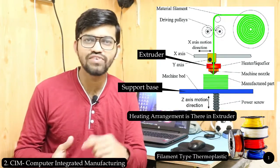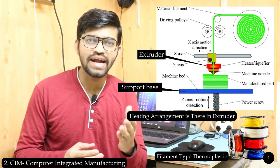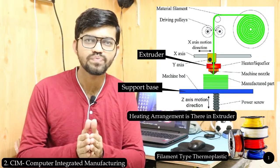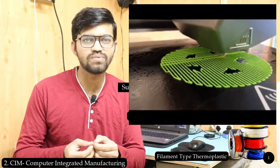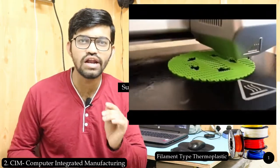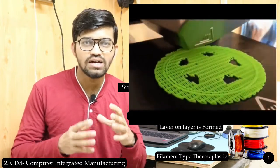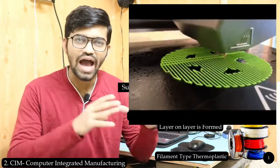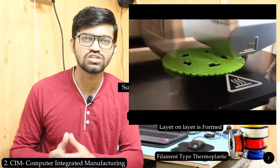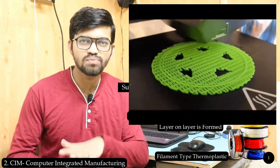Due to the heating coil inside the extruder, the thermoplastic filament is heated up to its melting point and gets melted. It is then extruded from the extruder in the form of a thin layer. These thin layers are formed one by one, and the extruder can move in all XYZ directions to form different designs.